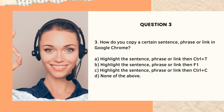Question number three: How do you copy a certain sentence, phrase, or link in Google Chrome? This one is very helpful and you will use this a lot. Letter A, highlight the sentence, phrase, or link, then Ctrl+T; B, highlight the sentence, phrase, or link, then Ctrl+C; and D, none of the above. The answer is letter C: highlight the sentence or link, then use Ctrl+C on your keyboard.